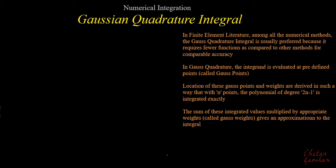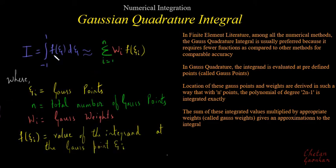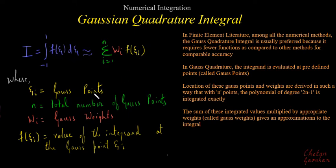What exactly Gaussian quadrature does: if we look at its formula in one dimension, for a function that goes from minus one to one, we can approximate the integral with this formula. It tells us that we do not evaluate the function over the entire domain from minus one to plus one. Instead, we evaluate it only at some specific points called Gauss points, multiply by corresponding Gauss weights, and sum the products over all Gauss points to get the integral value.